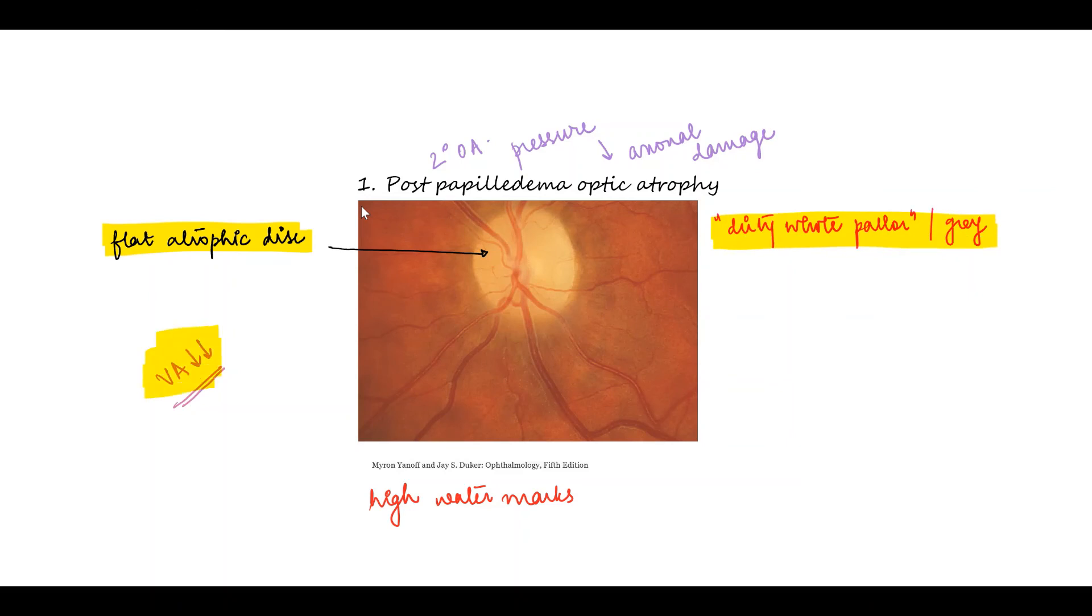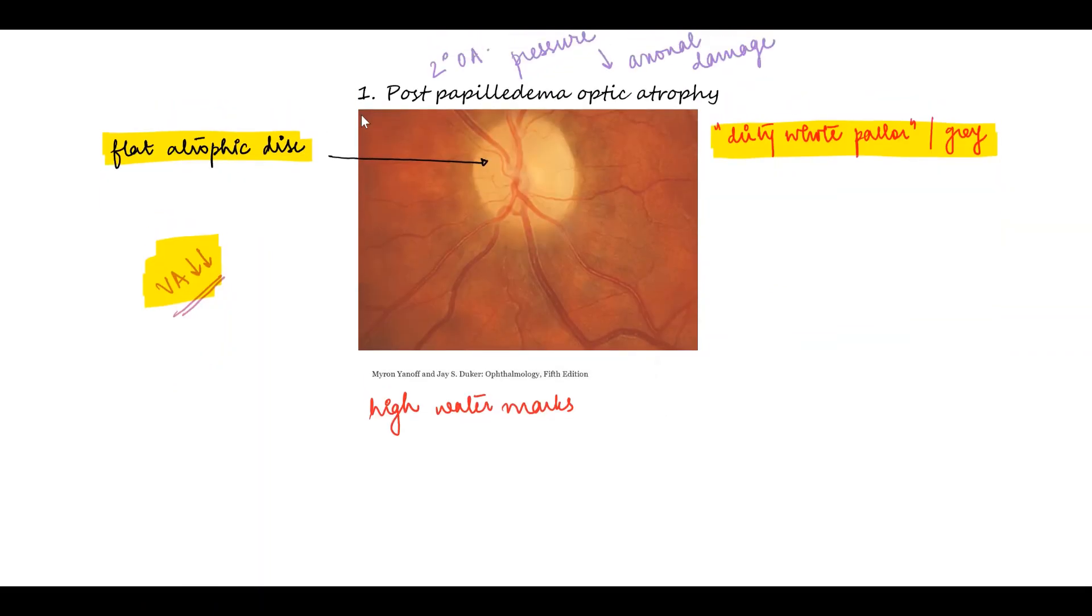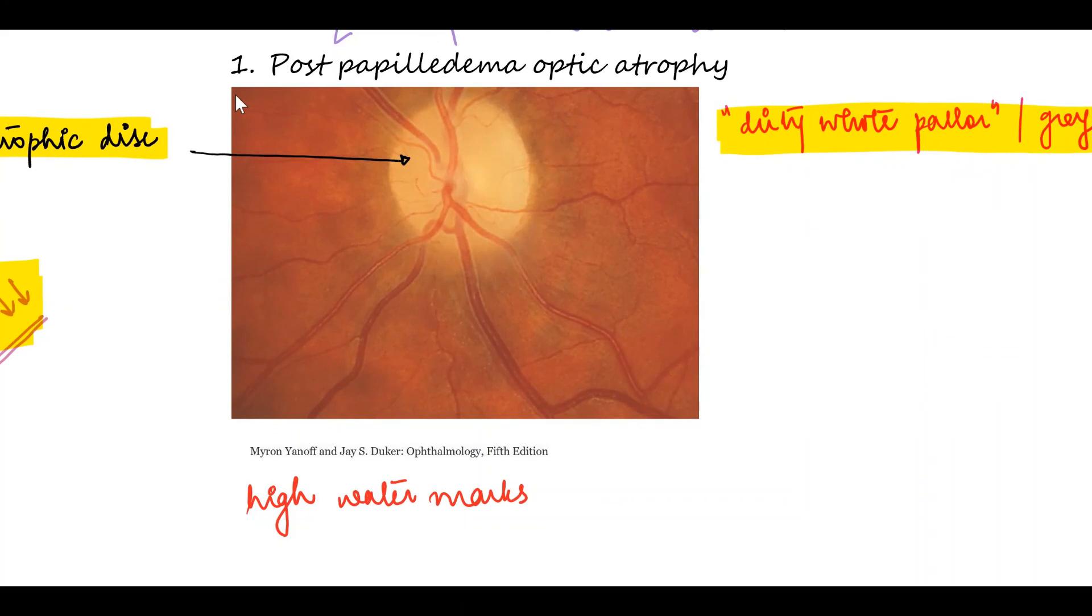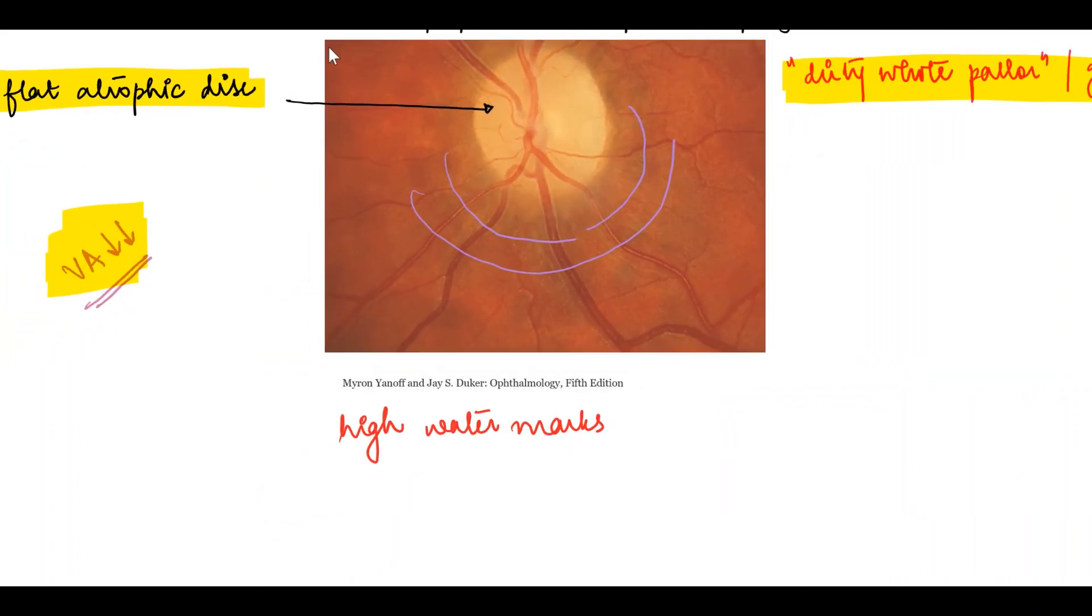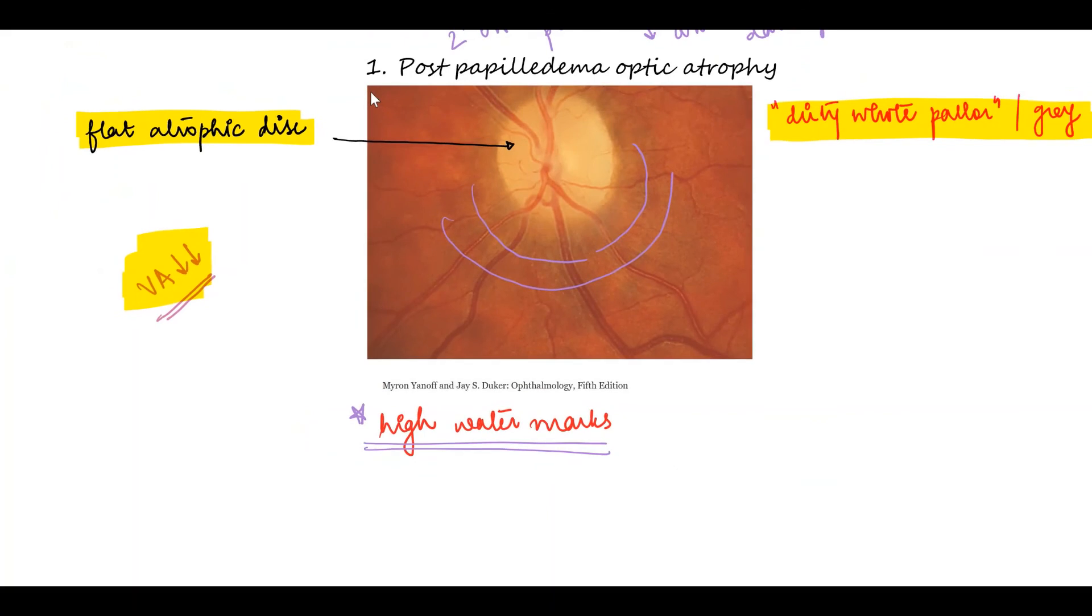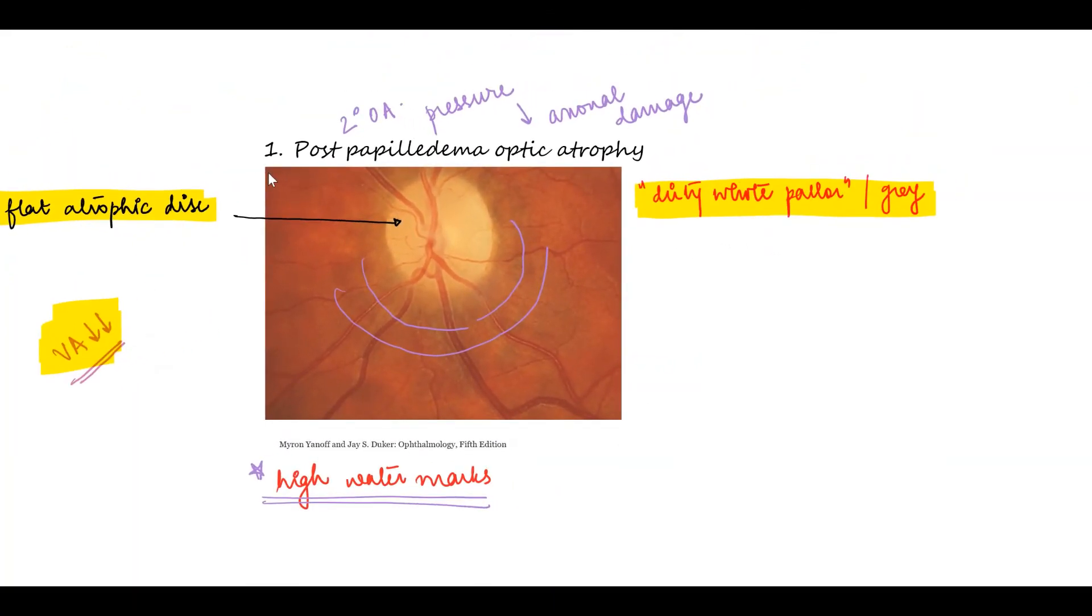There are severely constricted fields and one characteristic thing seen in the post-papilledema stage, not seen very distinctly here but we can see these folds around the disc. They are concentric lines and these are called the high water marks. These are post-papilledema findings of previous elevation of the disc, so they give us the extent of how much the disc had swollen previously. High water marks are typically seen after a high tide resolves. Similarly, here it is also showing us the previous swelling of the disc.